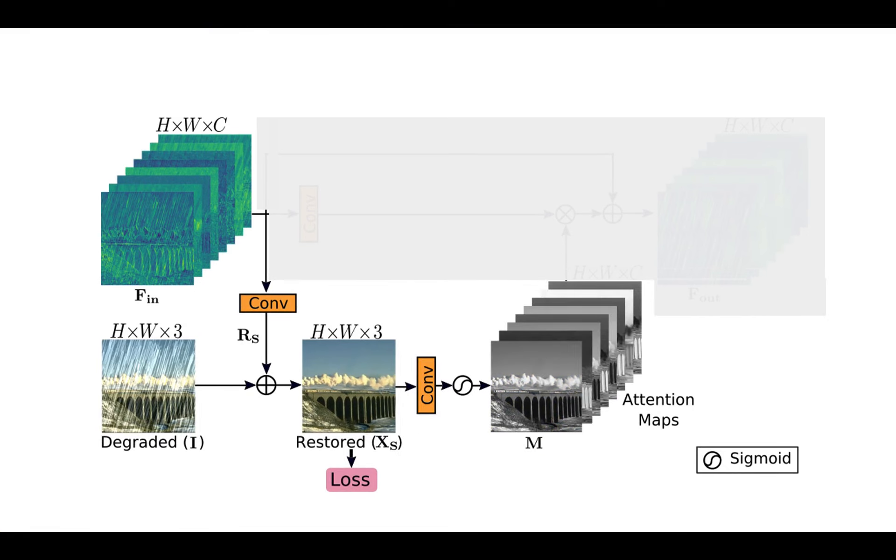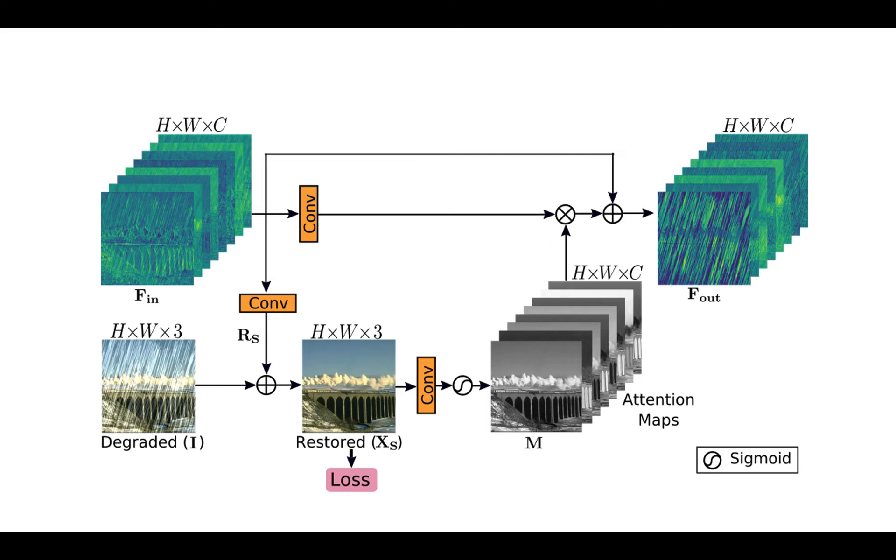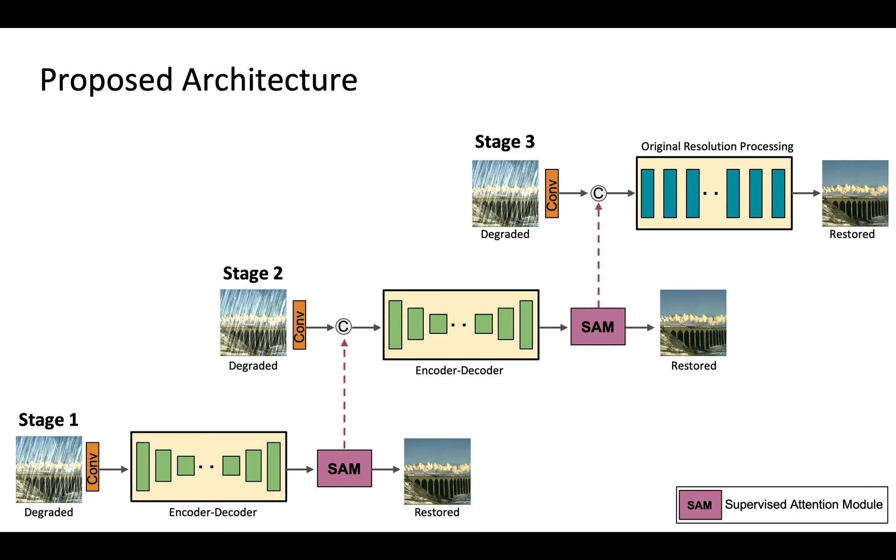Second, with the help of locally supervised restored image, it generates attention maps that are then used to recalibrate the features of current stage before being passed to the next stage. Finally, we add a cross-stage feature fusion mechanism that helps propagating multi-scale features from earlier stages to later stages. This procedure is repeated at each level of encoder-decoders.